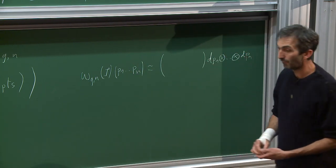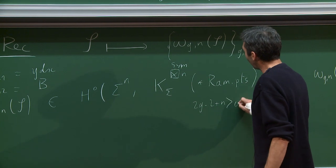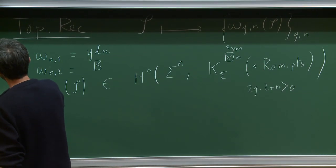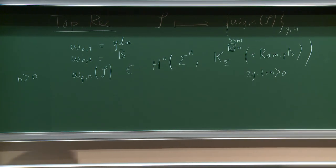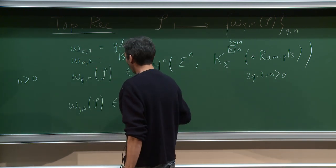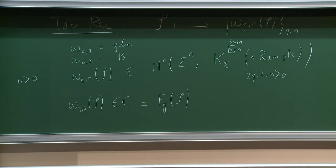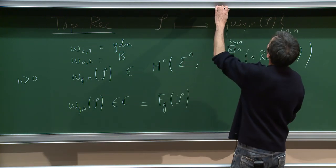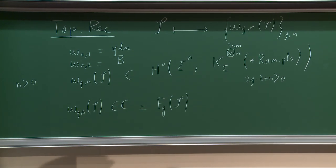For N positive, omega_{G,N}(S) evaluated at points P_1,...,P_N is a symmetric function of all the P_i's with poles only at the ramification points. For N equals zero, a zero-form is just a scalar — a complex number — and omega_{G,0}(S) is denoted F_G(S) in the literature. So for a given spectral curve, we have a sequence of complex numbers F_G.